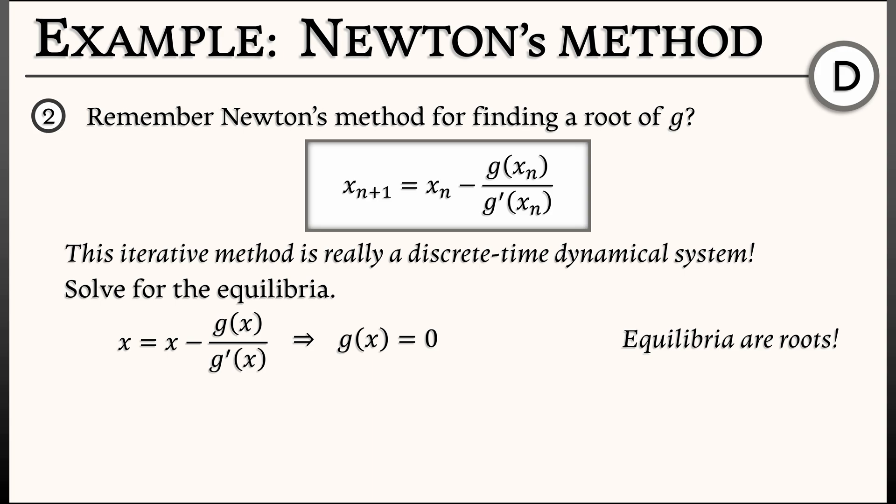Now to determine stability, what do we need to do? We need to take the derivative of the right-hand side with respect to x. That's the derivative of x - g(x)/g'(x). Okay, the derivative of x is 1. That's easy. For the second part, I'm going to need to apply the quotient rule. And I'll get minus g(x)g''(x) minus (g'(x))² all over (g'(x))².